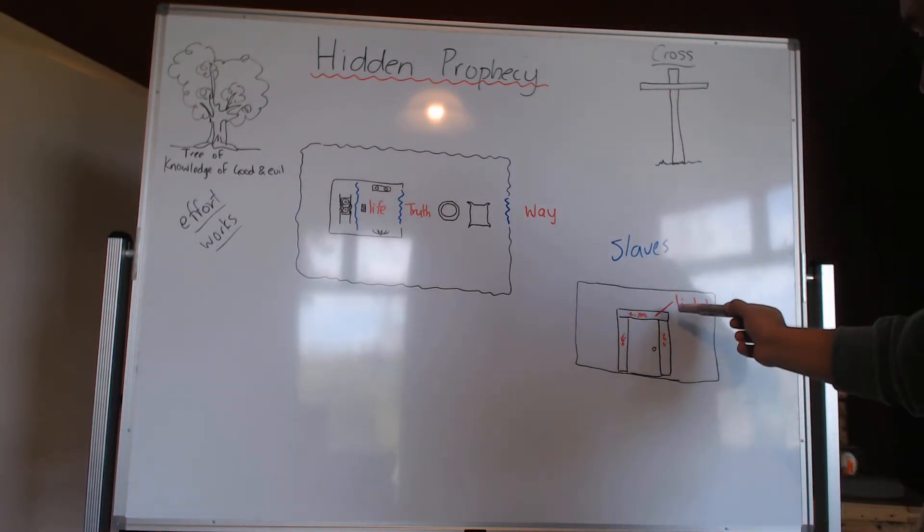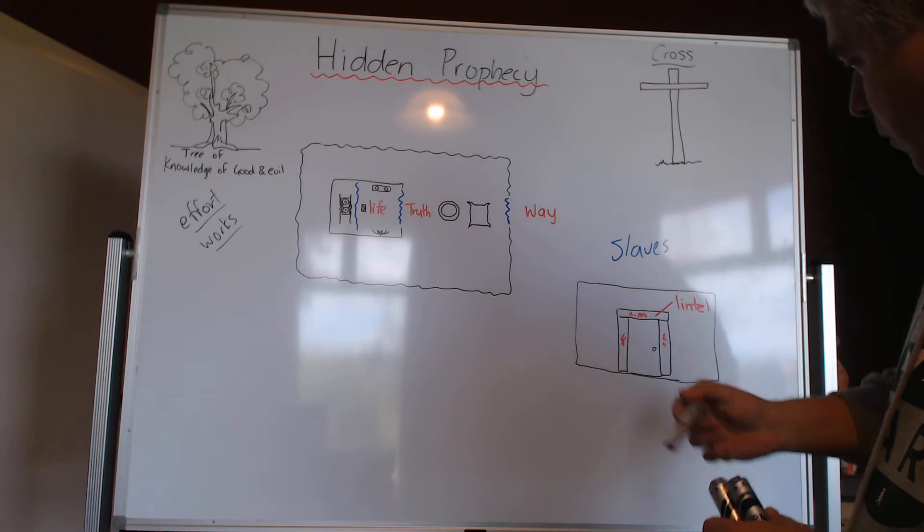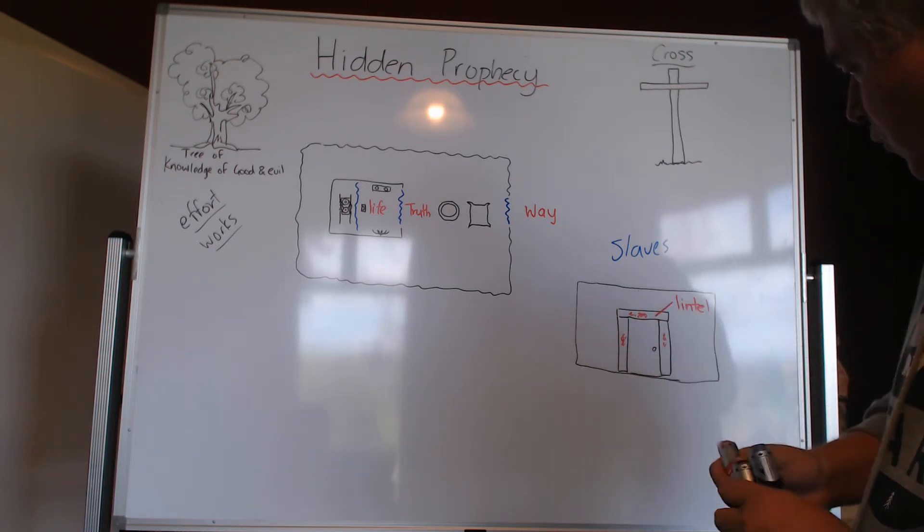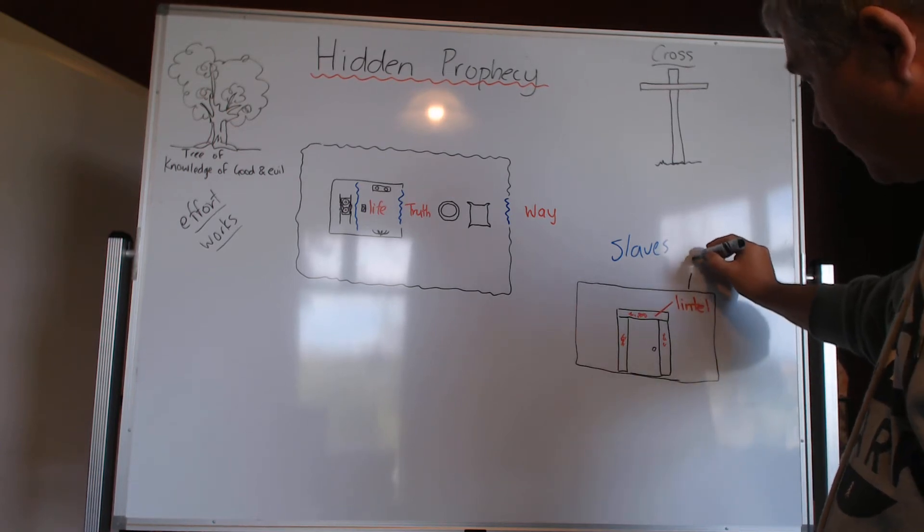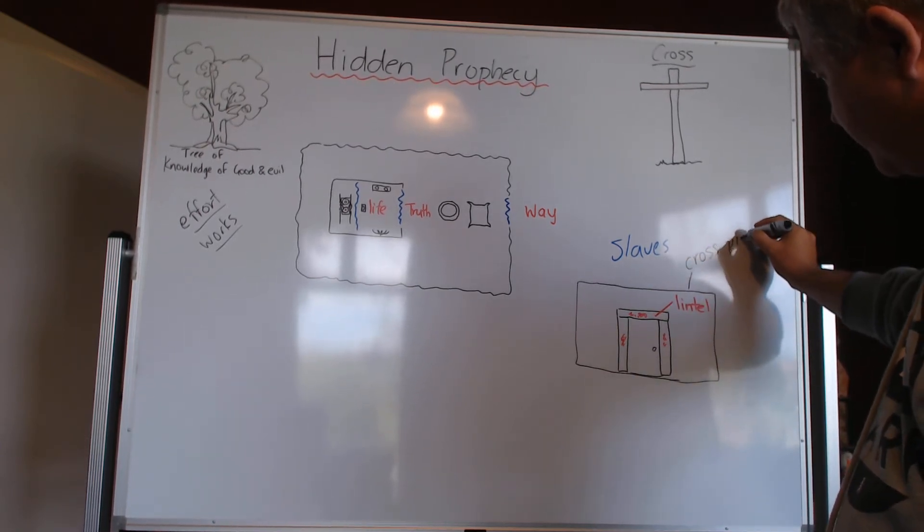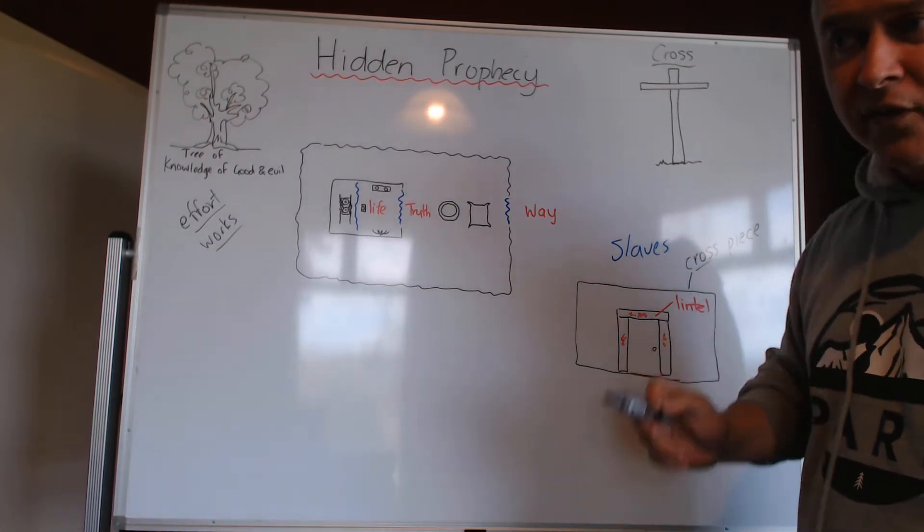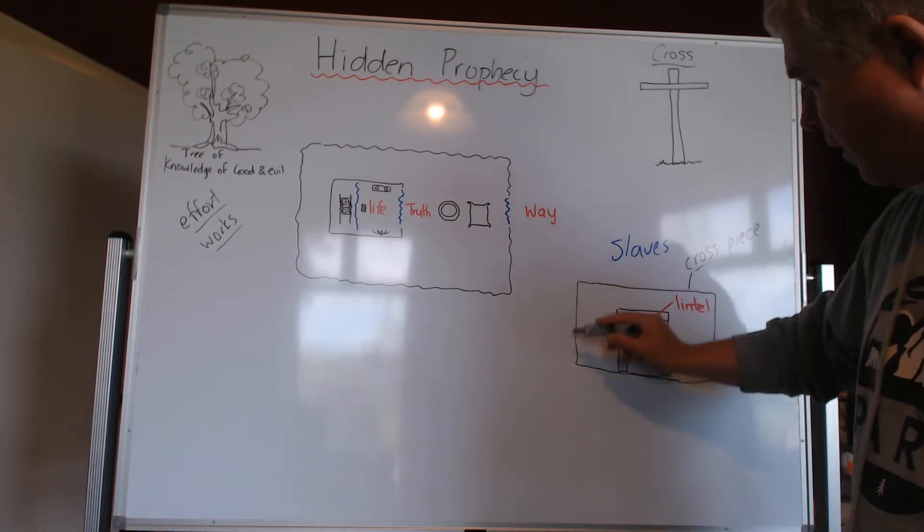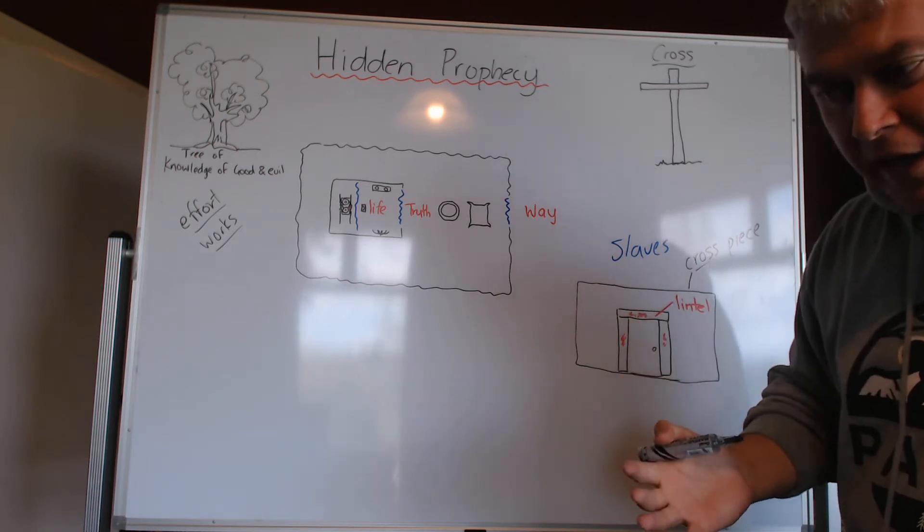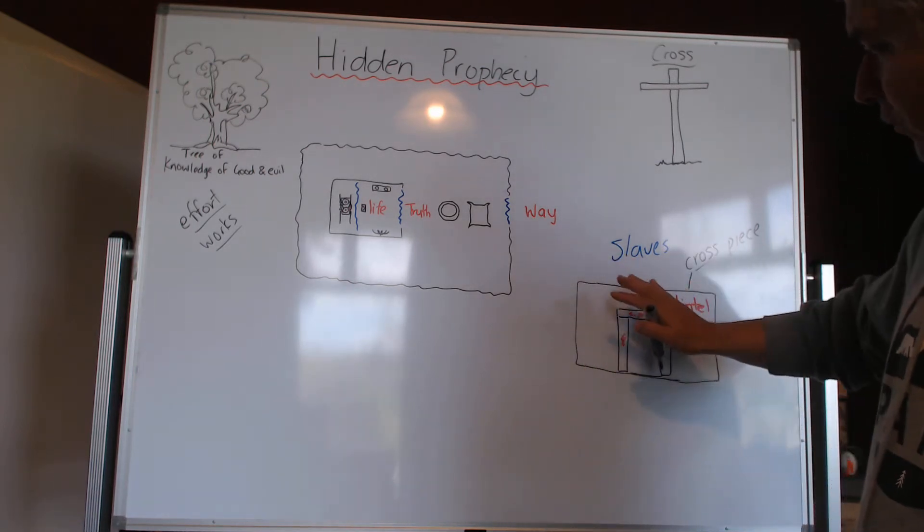This is really important. The Jewish people living in their homes were protected by the blood. Where is this blood applied? It was applied to the doorposts and the lintel. The lintel is literally translated crosspiece. There it is - the crosspiece. The blood applied to the crosspiece is what saved them from the destroying angel.